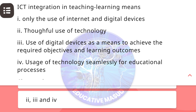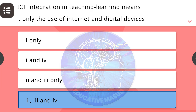ICT integration in teaching learning means: (1) only the use of internet and digital devices, (2) thoughtful use of technology, (3) use of digital devices as a means to achieve the required objectives and learning outcomes, (4) use of technology seamlessly for additional processes. Choose the correct option. Correct answer is 2, 3, and 4.